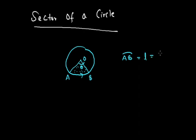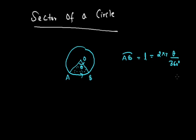So the circumference of the full circle is 2πr. We are finding the length of the arc for angle theta, so L is equal to 2πrθ upon 360 degrees.